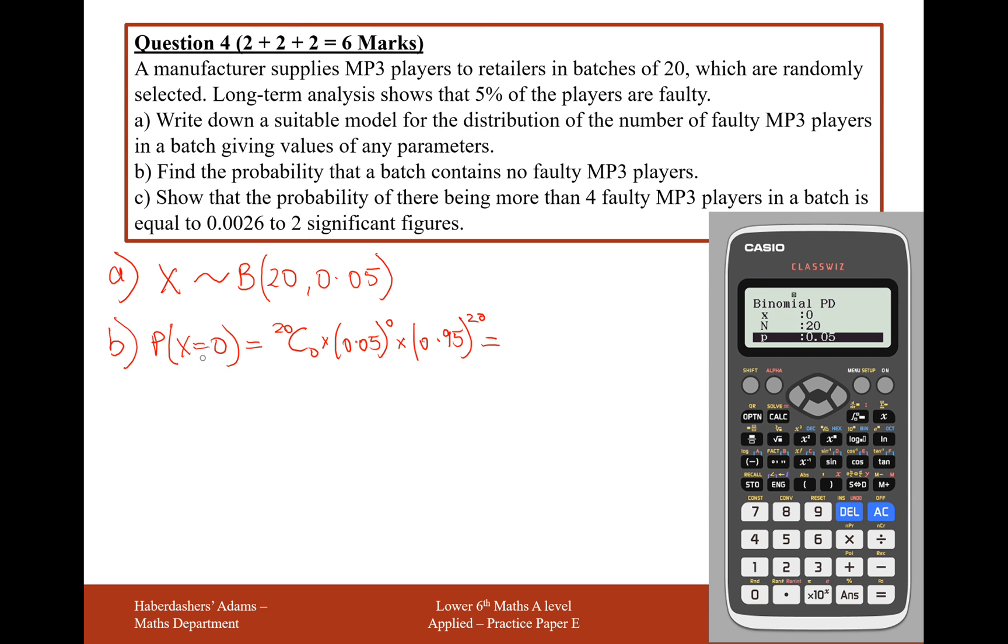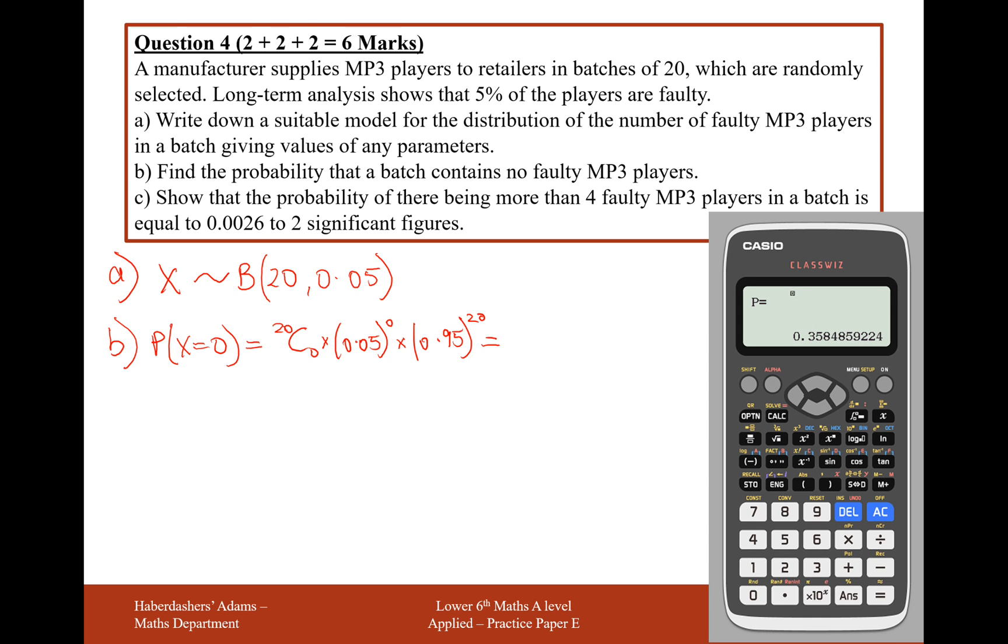Now, what you're looking for is for 0 successes or 0 faulty MP3 players out of 20, the probability of 0.05 for each one, and you get 0.358.